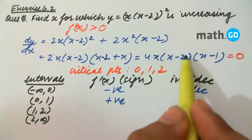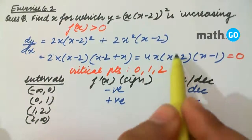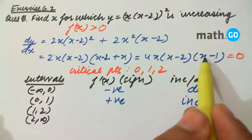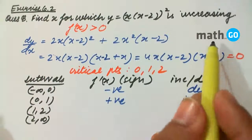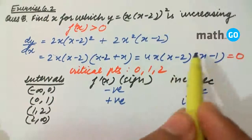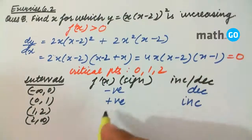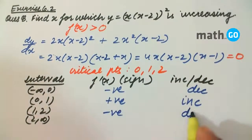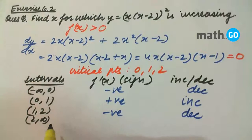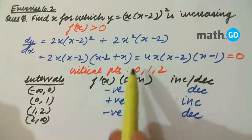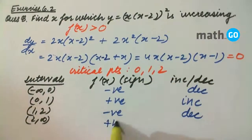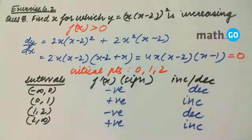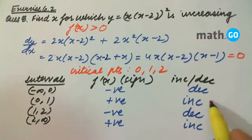For 1 to 2, consider x = 3/2: (3/2 - 2) = -1/2 is negative, and (3/2 - 1) = 1/2 is positive, so overall the value is negative — therefore decreasing. For 2 to infinity, consider x = 3: the complete function is positive, therefore increasing. So the intervals for which the function is increasing are 0 to 1 and 2 to infinity.